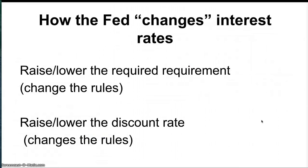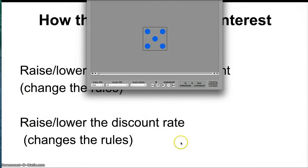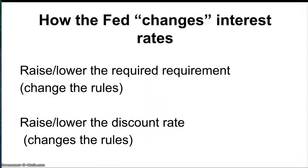So how does the Fed actually change the interest rate? It can raise or lower the reserve requirement: raising it means banks have less money to loan out; lowering it means they have more. Same with the discount rate — raising it makes borrowing more expensive so banks take fewer loans; lowering it lowers the cost of money so banks take more loans. But the Fed doesn't adjust the reserve requirement or discount rate too often.